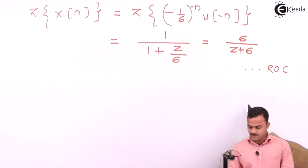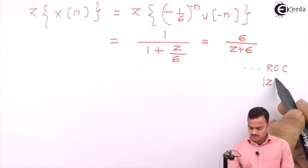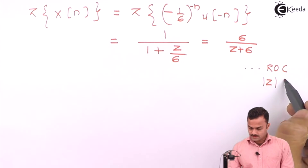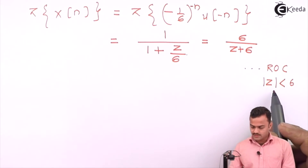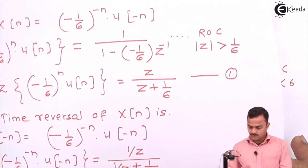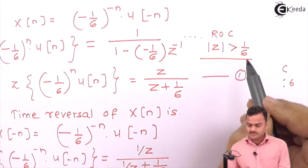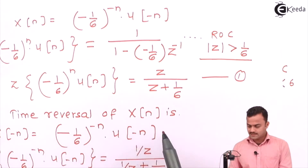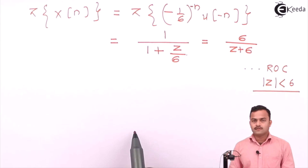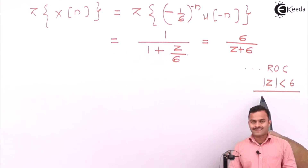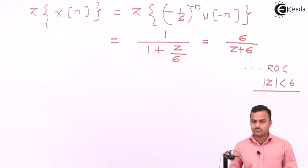The ROC must be mod z less than 6. So since the original ROC was mod z greater than 1 by 6, the new ROC here is mod z less than 6 — just the reciprocal of whatever ROC the original signal had. Thank you.